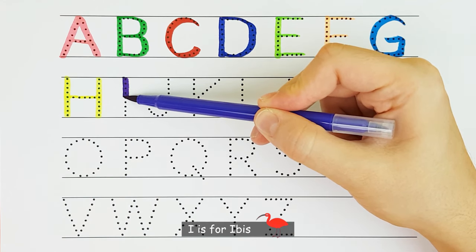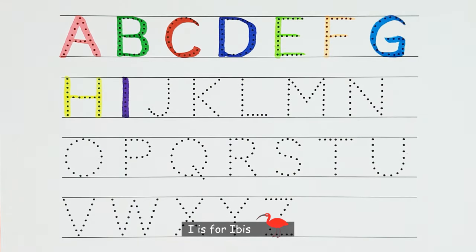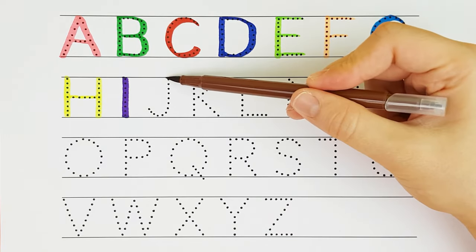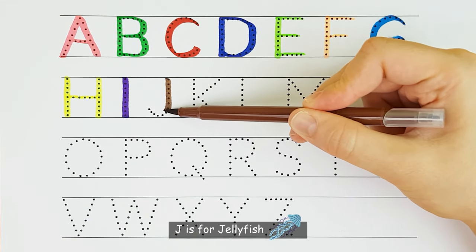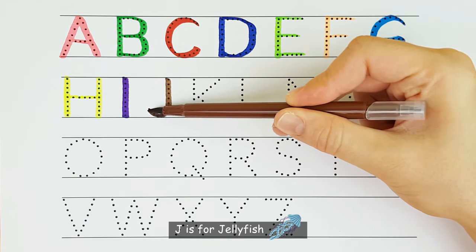I. I is for ibis. I. J. J is for jellyfish. J.